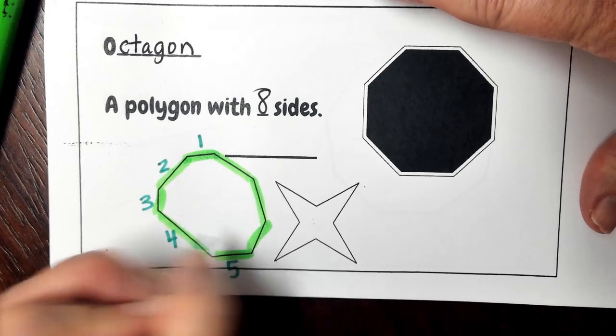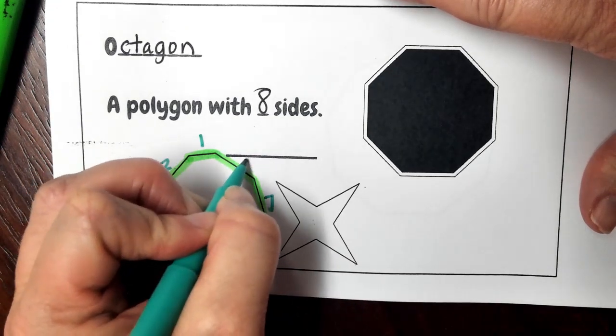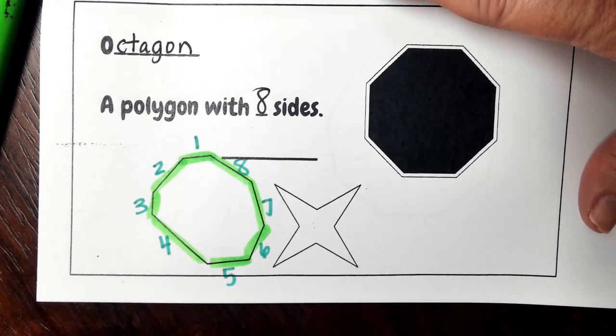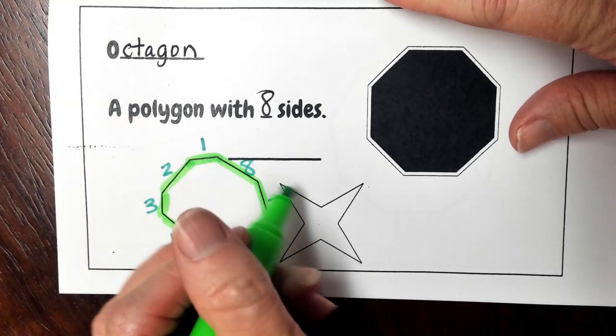And so this definitely is not a regular octagon because all of the sides look different in size and their angles are all going to be different. And then we have this figure here.